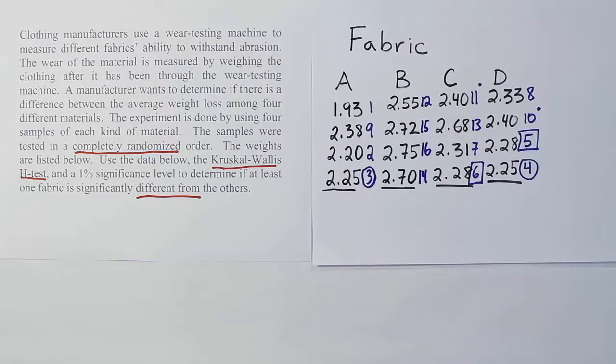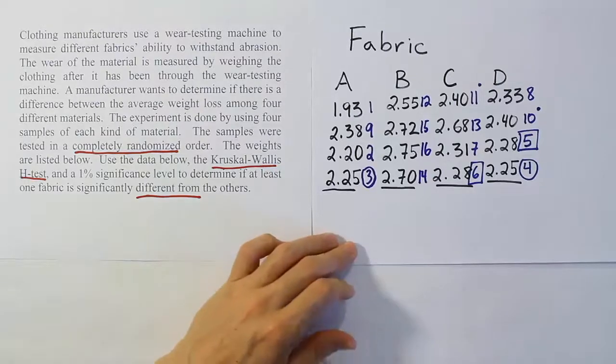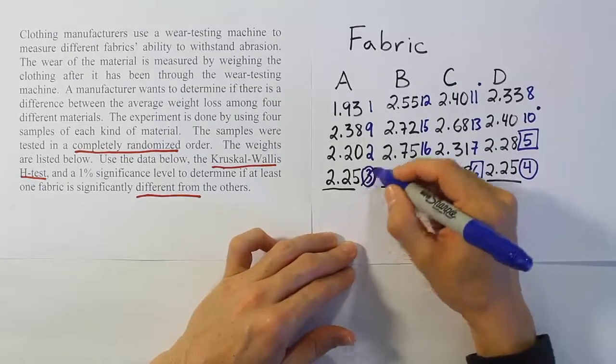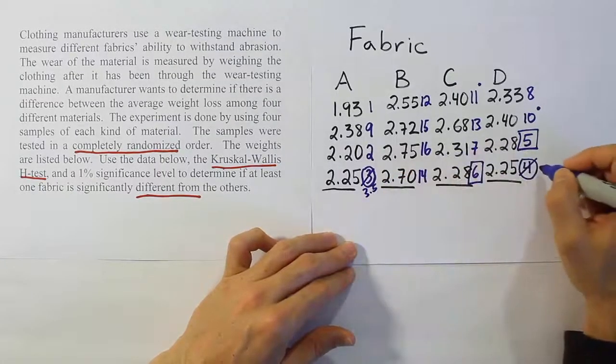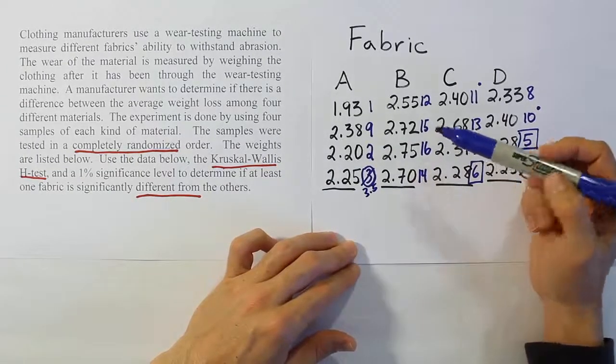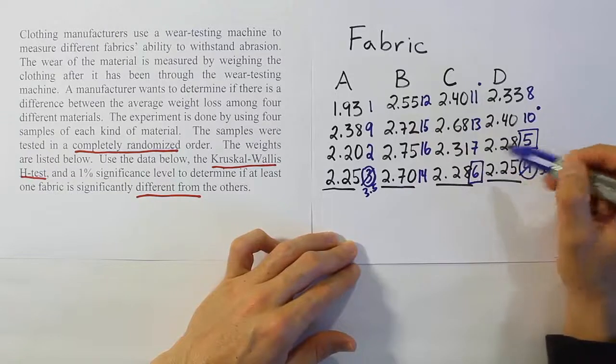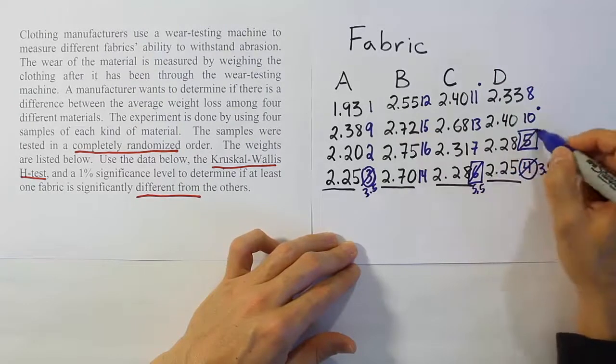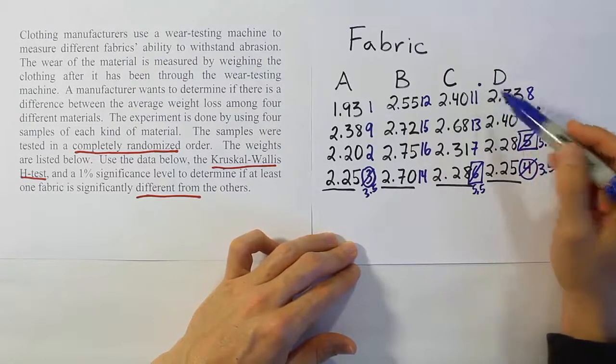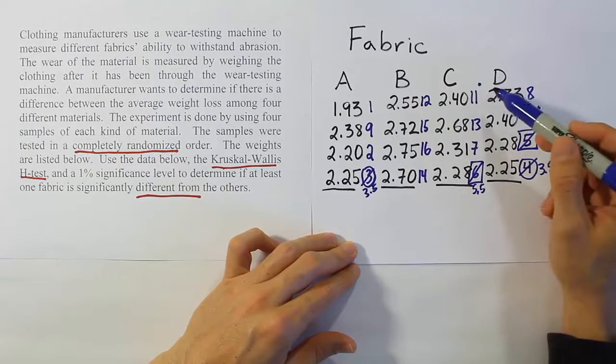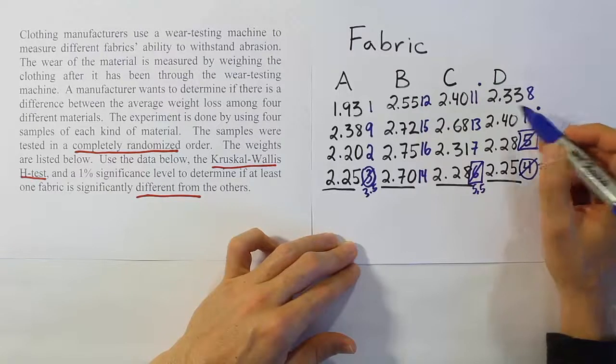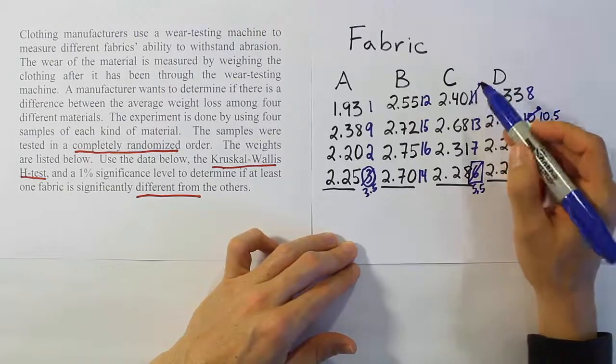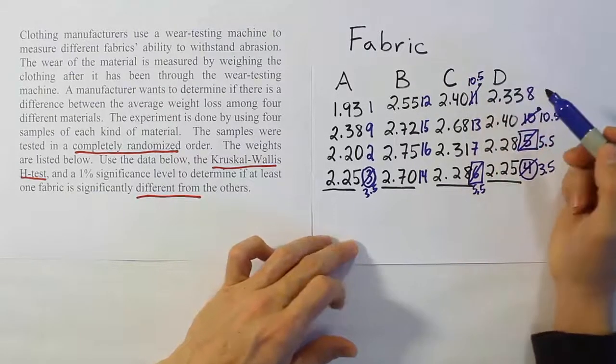Now let's handle the ties. For the ties, what we want to do is average them. So 3 and 4, they're both circled, so we have to average those two. That's 7 divided by 2 is 3.5. Then we'll go on to look at the other ones, the ones in the boxes. Again, there's only two of them. We average them. That's 11 divided by 2. We get 5.5. And then here, same thing. We have 10 and 11. Again, there's only two that are tied, but we have to average them. So 10 plus 11 gives us 21 divided by 2 is 10.5.